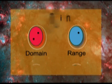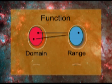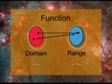This is also an example of a function. Even though the two coordinates in the domain end up at the same point in the range, there is still one unique value in the range for every value in the domain.